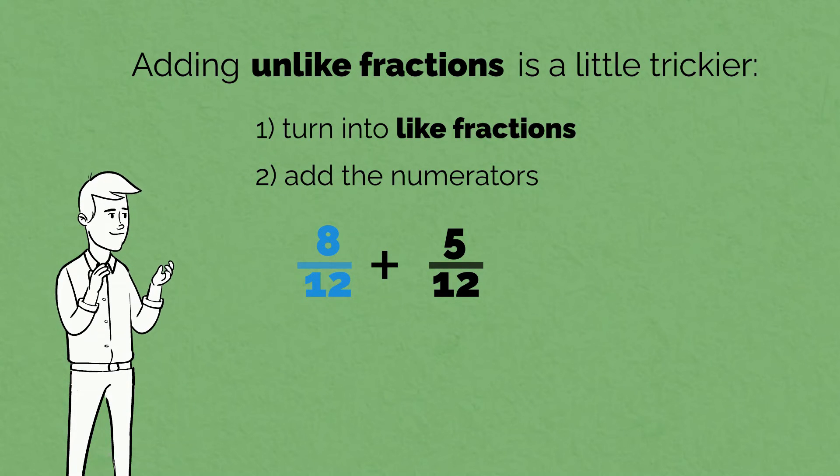We have turned 2 thirds into the equivalent fraction 8 twelfths. Now our two fractions are like. 8 twelfths plus 5 twelfths equals 13 twelfths.